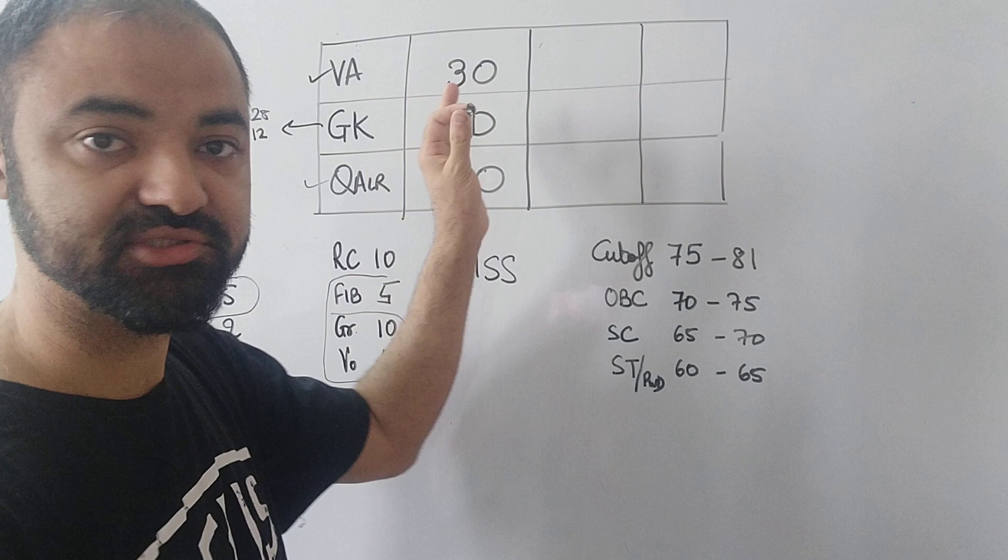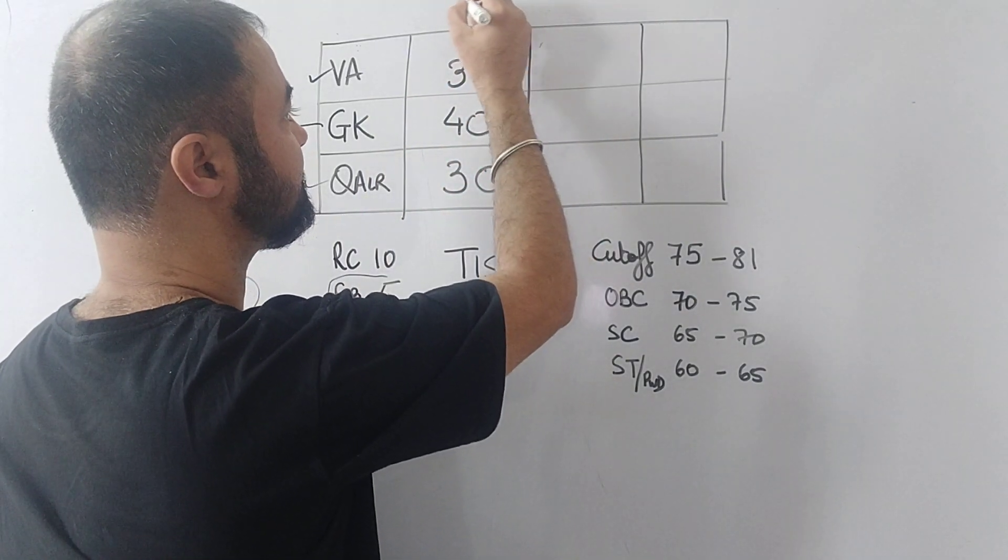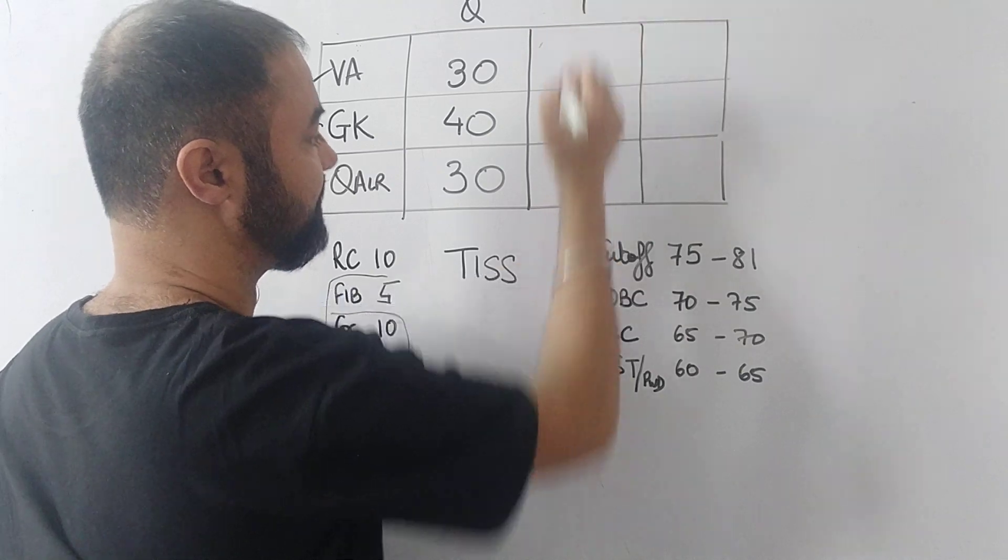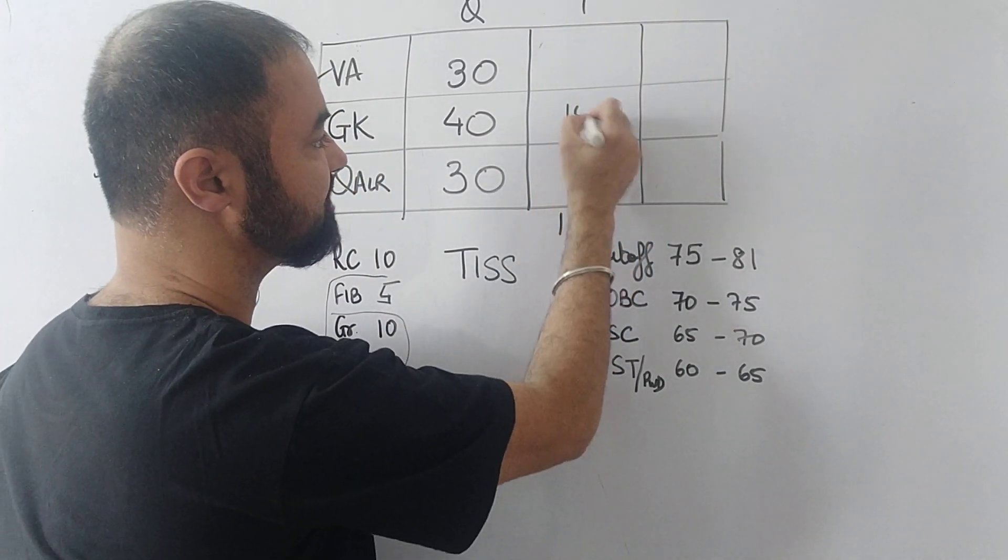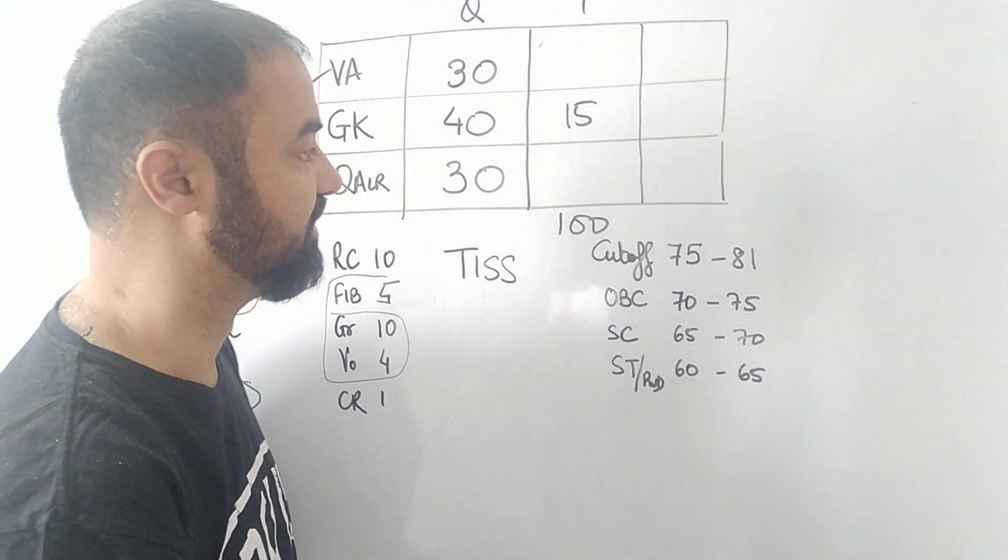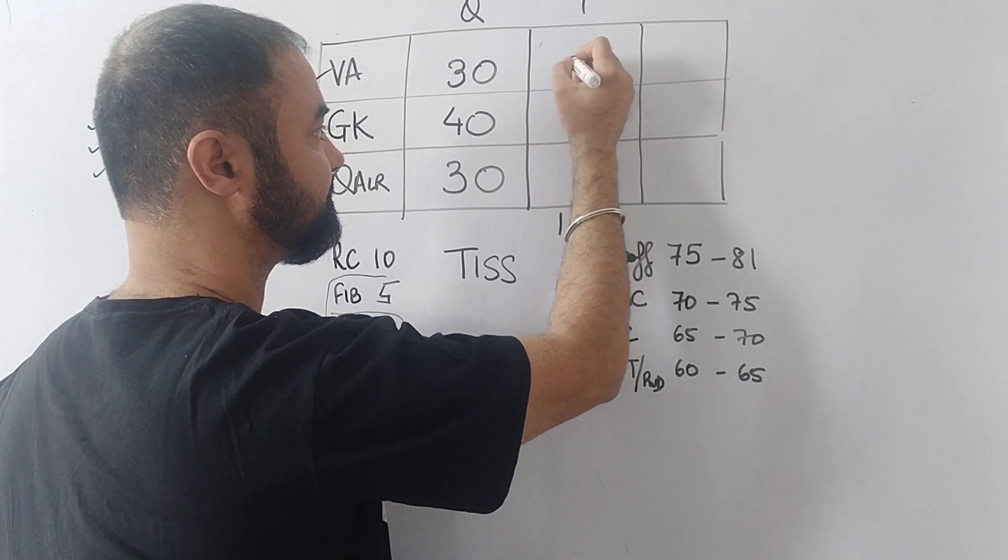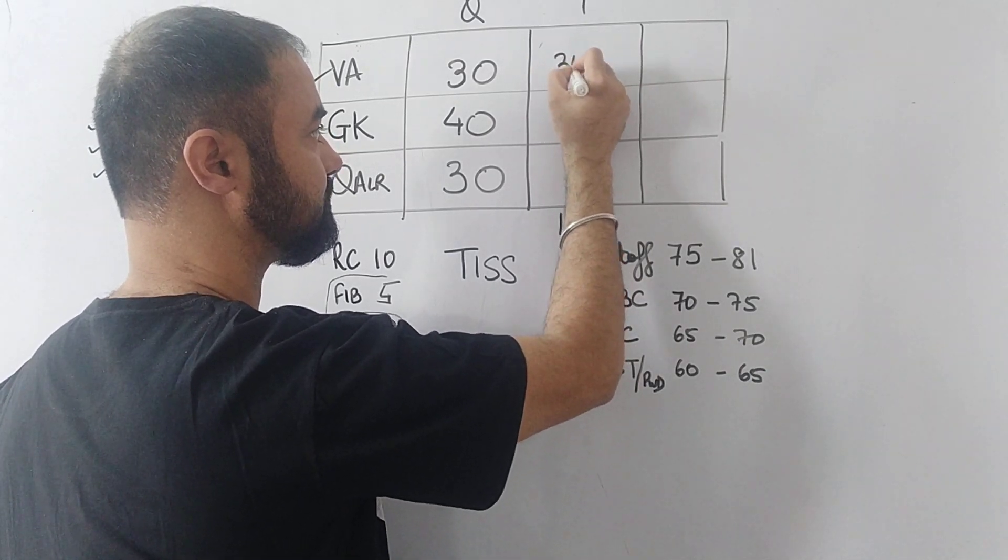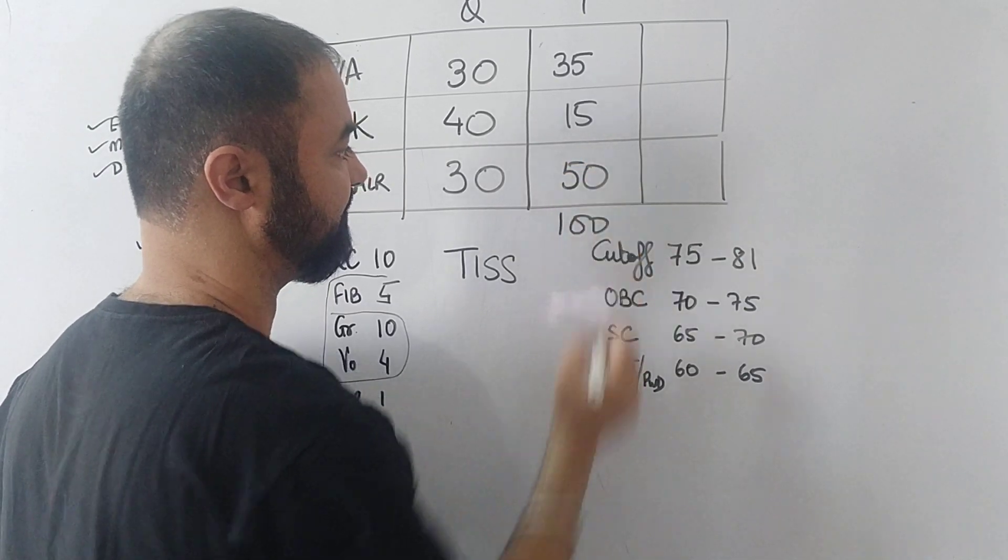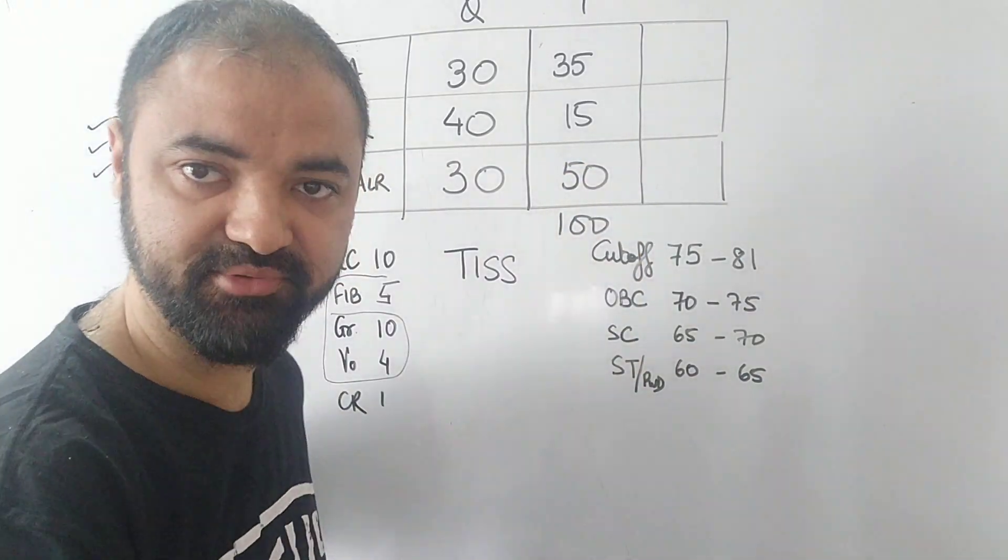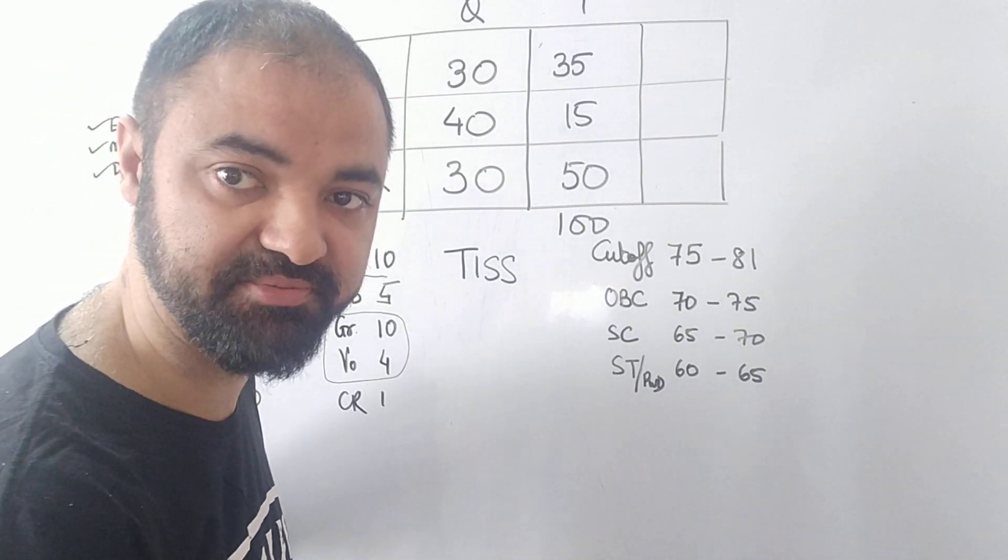Verbal 30 questions, GK 40 questions, quant 30 questions. Now how to approach ideally - there is no fixed rule. We have got 100 minutes total. GK ideally 15 minutes is more than sufficient. Verbal will be around 30 to 35 minutes, and quant I can spend the maximum 50 minutes.